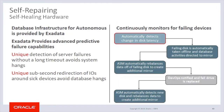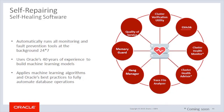Exadata not only continuously monitors for failing devices, it also provides redundant database servers that provide active-active, highly available clustered servers, hot-swappable power, redundant storage grids that provide data mirrored across storage servers, and redundant networks that include redundant interconnect connections. Fault prevention tools work in the background 24 hours a day, seven days a week, using Oracle's 40 years of experience to build machine learning models to monitor the system and ensure maximum availability and healing. It applies machine learning algorithms and Oracle's best practices to fully automate database operations.